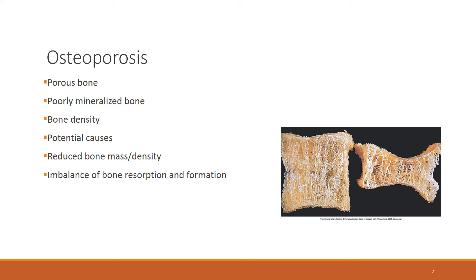When osteoporosis occurs, patients may experience compression vertebral fractures in the spine and wrist fractures. Compression fractures are common, and because of these fractures in the spine, the patient may have a decrease in height and may develop a hump — a dorsal hump — which is an abnormal curvature in the upper thoracic spine.